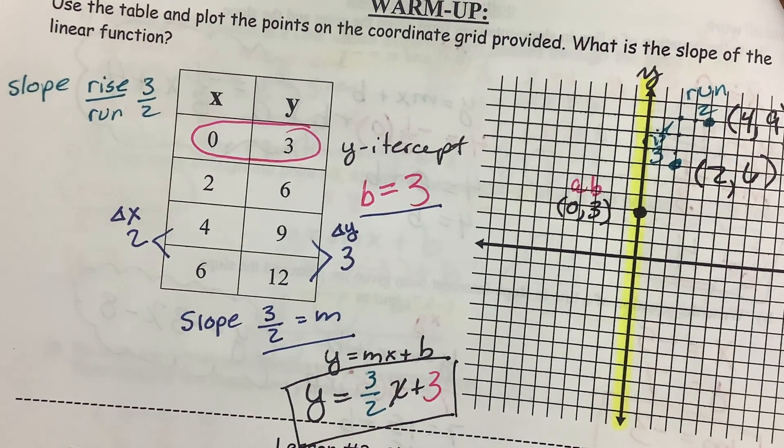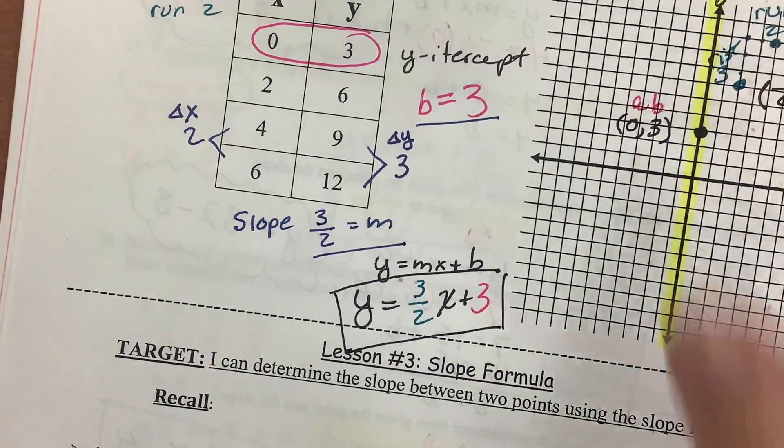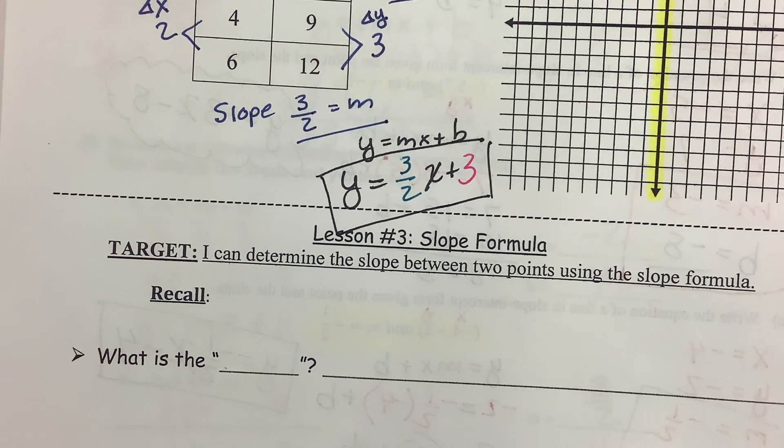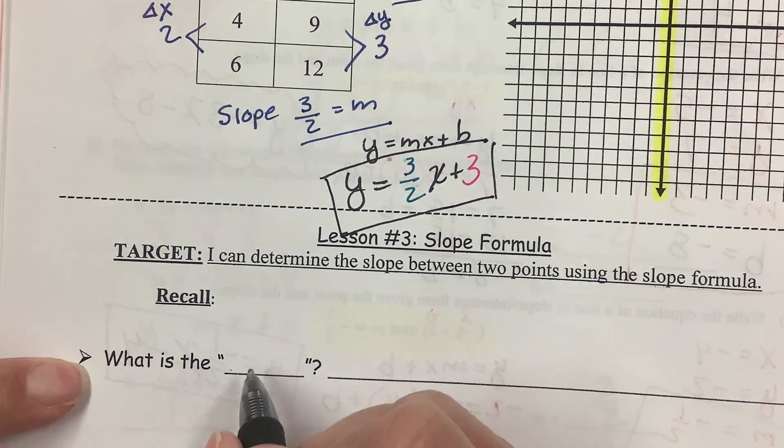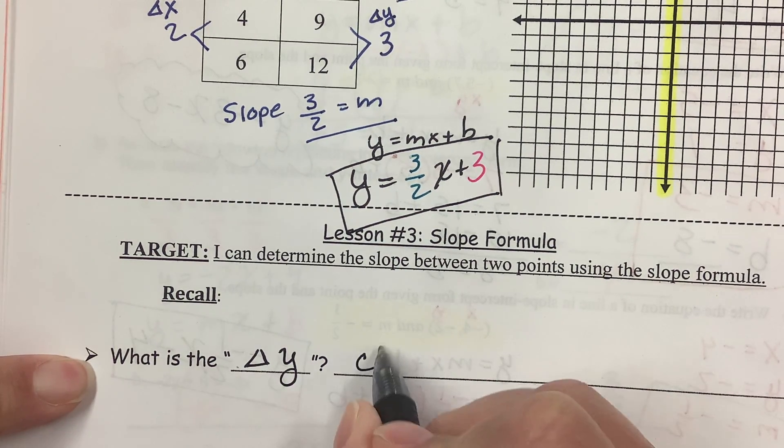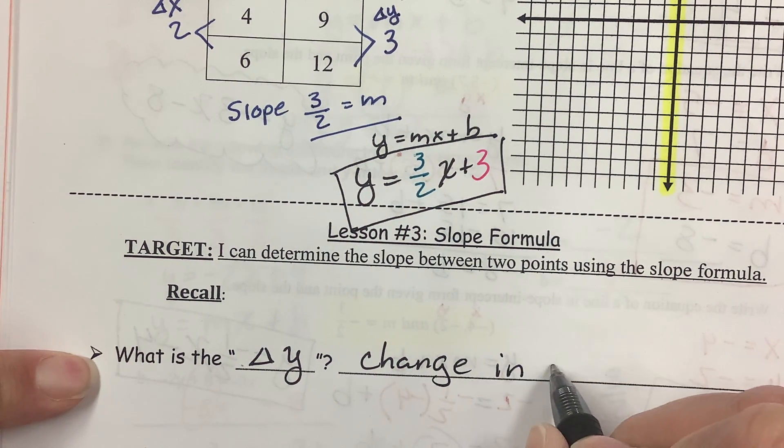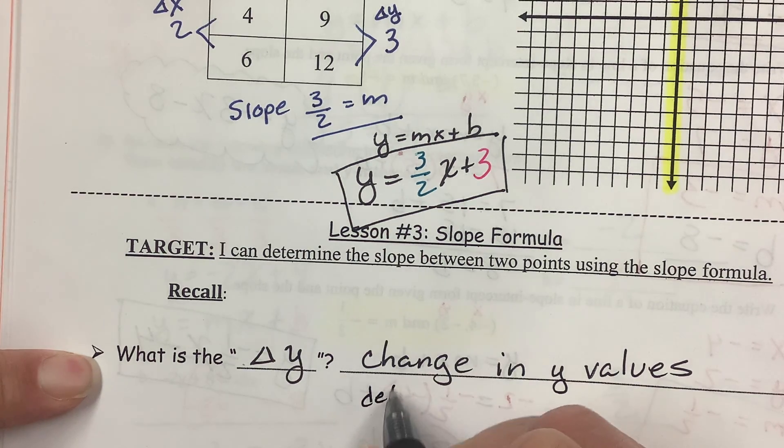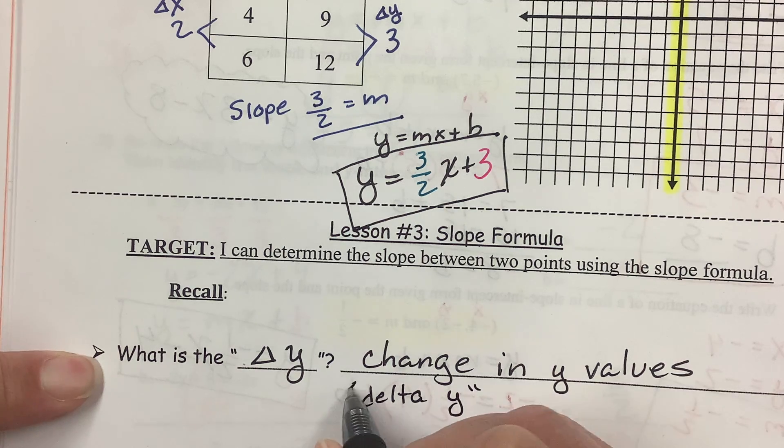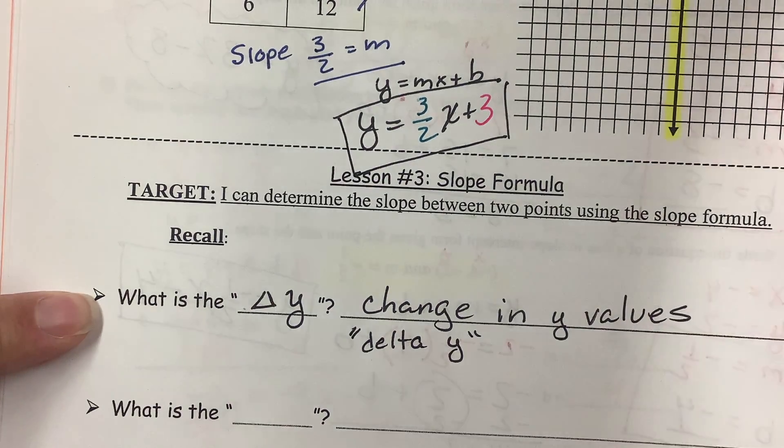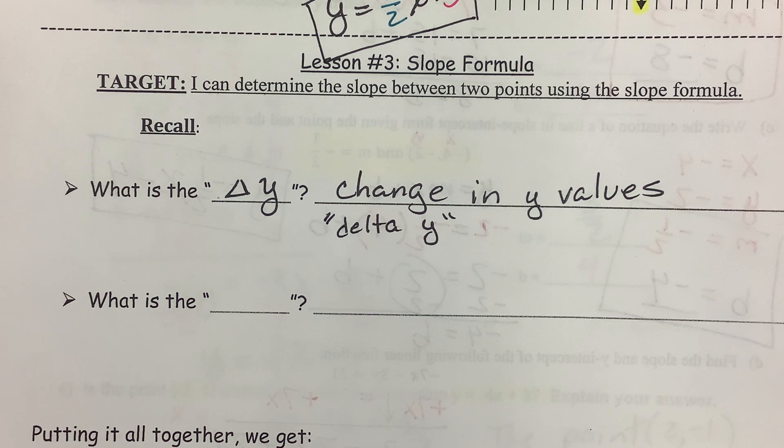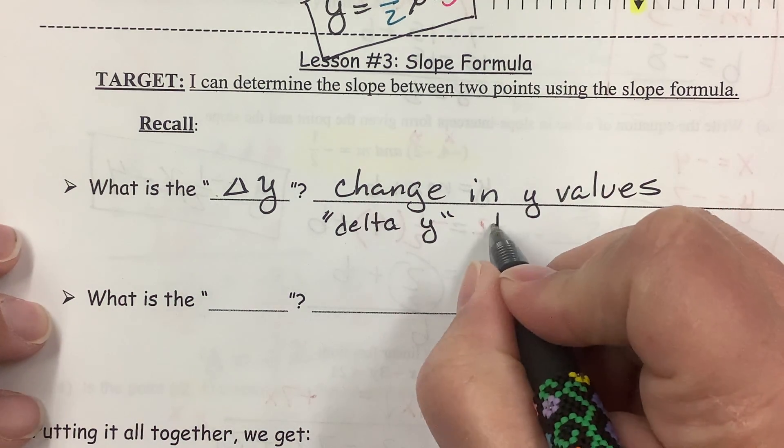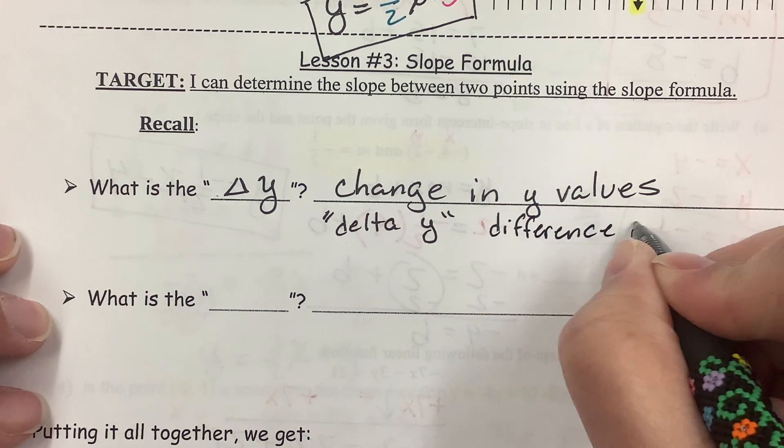All right. So, target. I can determine the slope between two points using the slope formula. There's a slope formula? So, what is the delta y? That is the change in y values. Because d is delta. You say that delta. D-E-L-T-A. Delta y. And that's the change in y's values. Delta is difference.